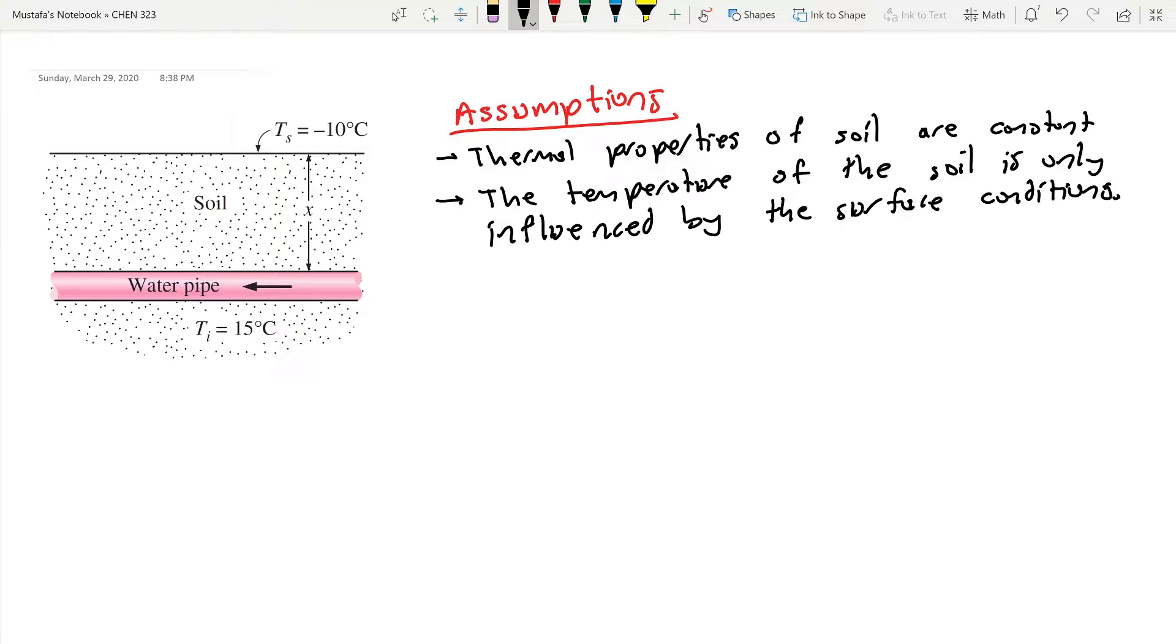So now let's think about this analysis. If we take a look at this geometry, we are dealing with a large scale object. So we clearly know that this is not a lump capacitance problem. And you can see the soil goes indefinitely in the x direction. So that means we can approximate this as a semi-infinite object.